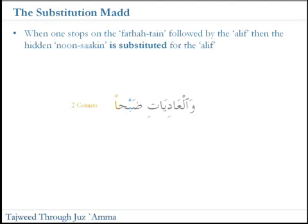Here we have a sentence which ends with a fat-tain and it's normally accompanied with an alif. So we have the ha with a fat-tain and an alif after it. Now normally if you were to continue reading, that last sound would be 'han'. When we read this and we stop, we will say 'ha' — too long. So if I read this it's 'wa-la-a-di-ya-ti-ud-da-ba-ha', and that last ha is two counts.